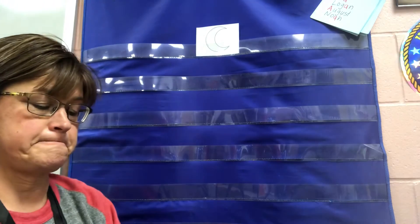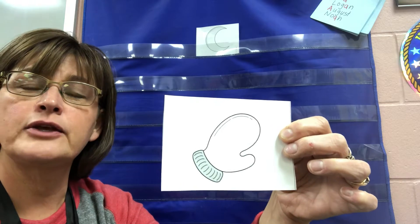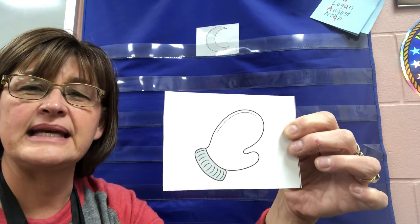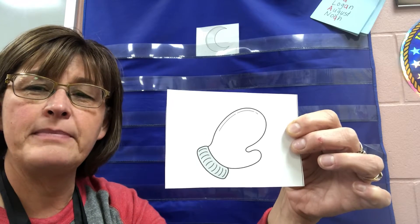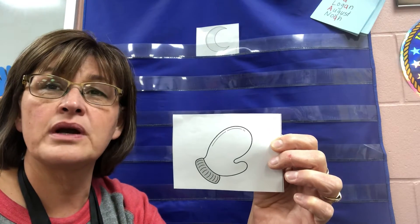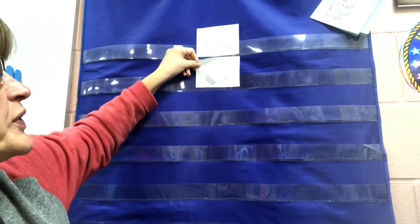So now let's listen and hear what we hear at the beginning of the next card. Take a peek. Think in your brain. Say it in your brain. Say it out loud. Mitten. Mitten. Do you hear the same? Moon. Mitten. Do you hear the same sounds together at the beginning of the word? Moon. Mitten. They do sound the same so I'm going to put that card right underneath in my chart.